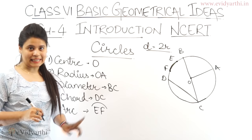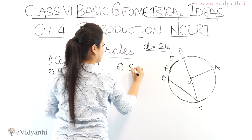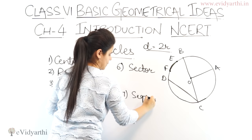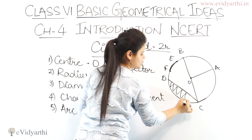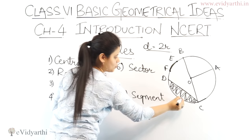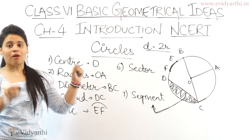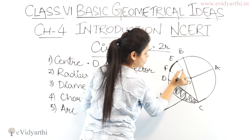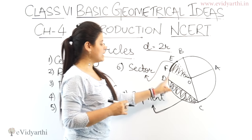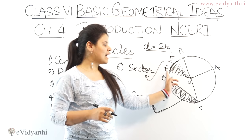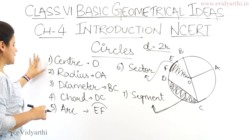The last two things are a sector and a segment. A segment of the circle is the portion formed with a chord — the region between the chord and the arc. A sector of the circle is the portion formed with the arc — if we join the two points of an arc to the center, the area enclosed is the sector. So sector and segment look similar but: segment is the portion enclosed by the chord, and sector is the portion enclosed by joining the arc's endpoints to the center.